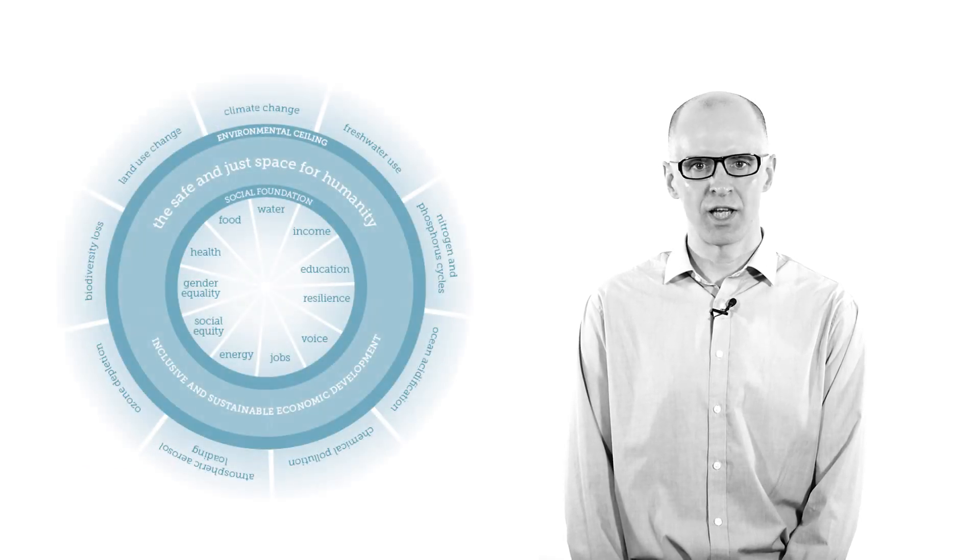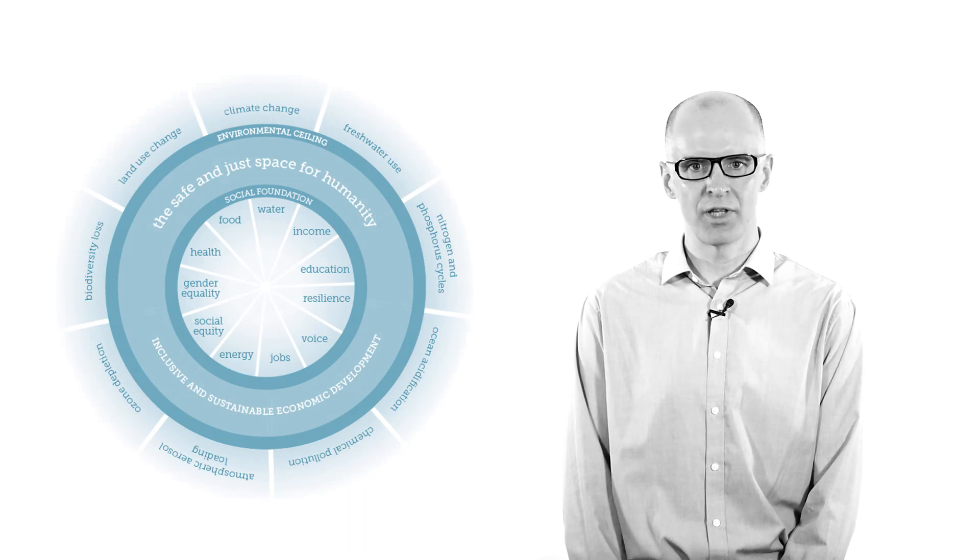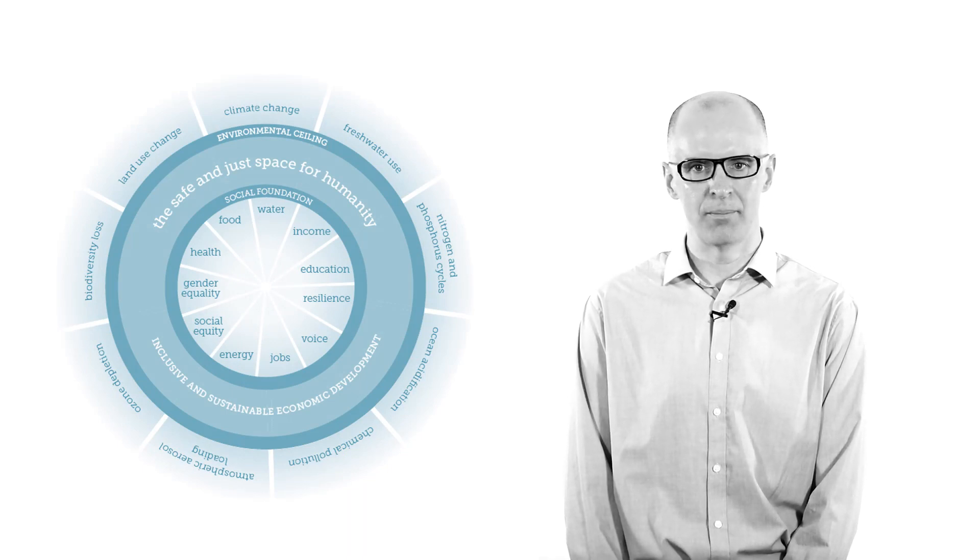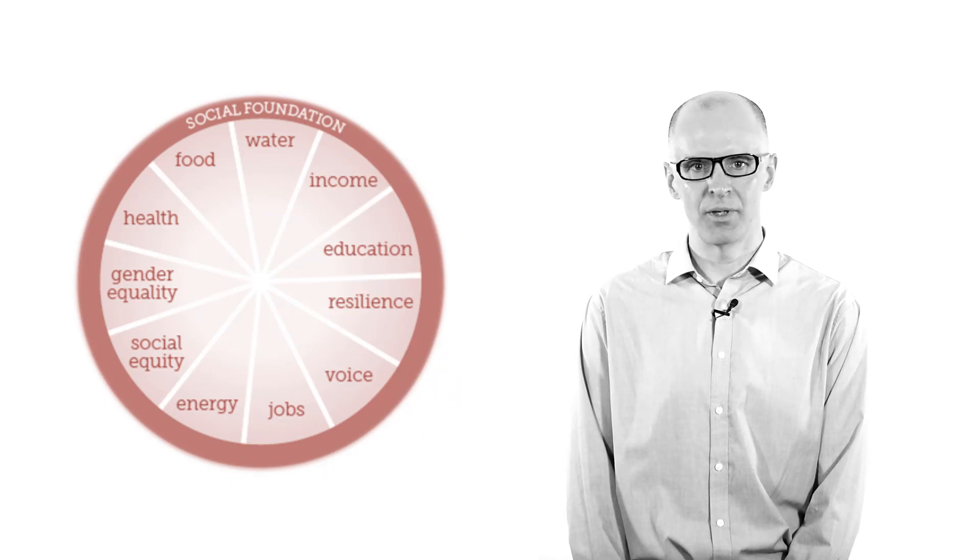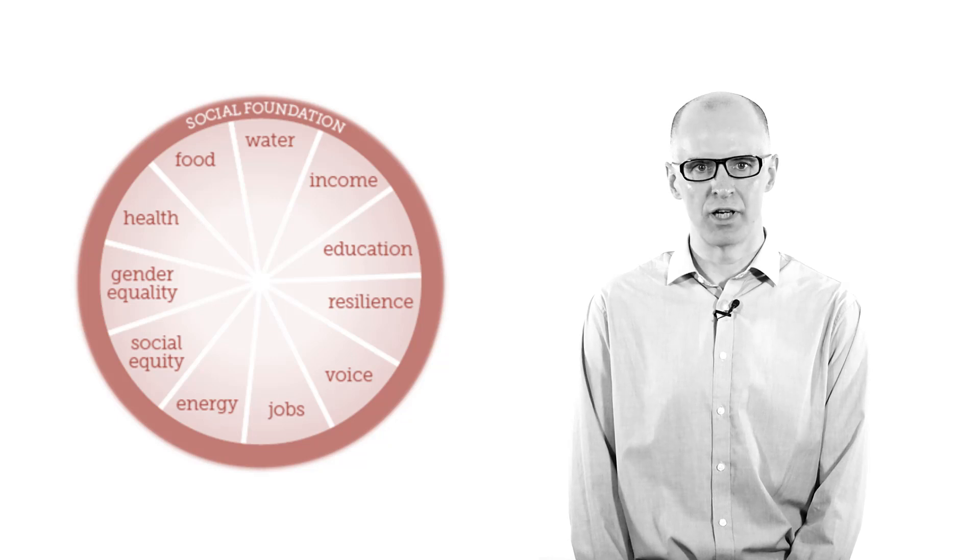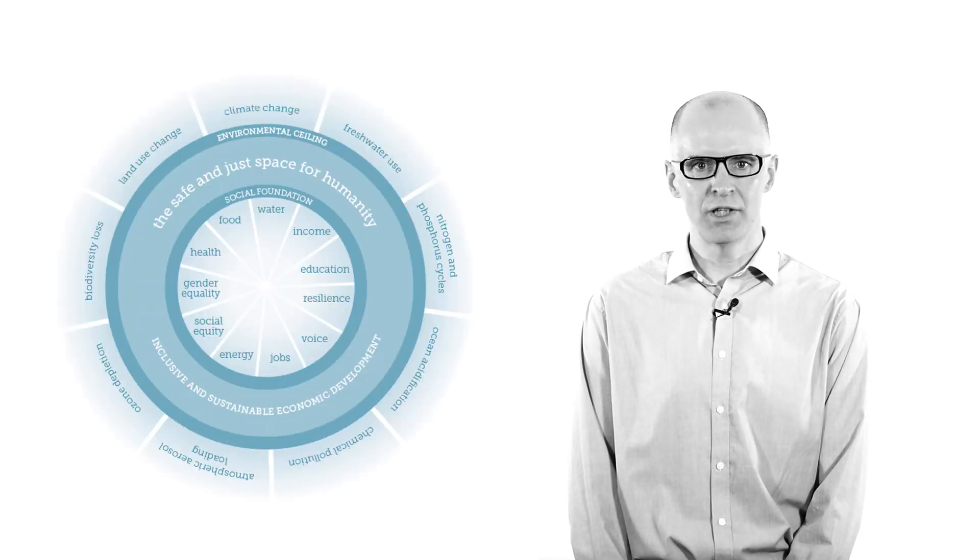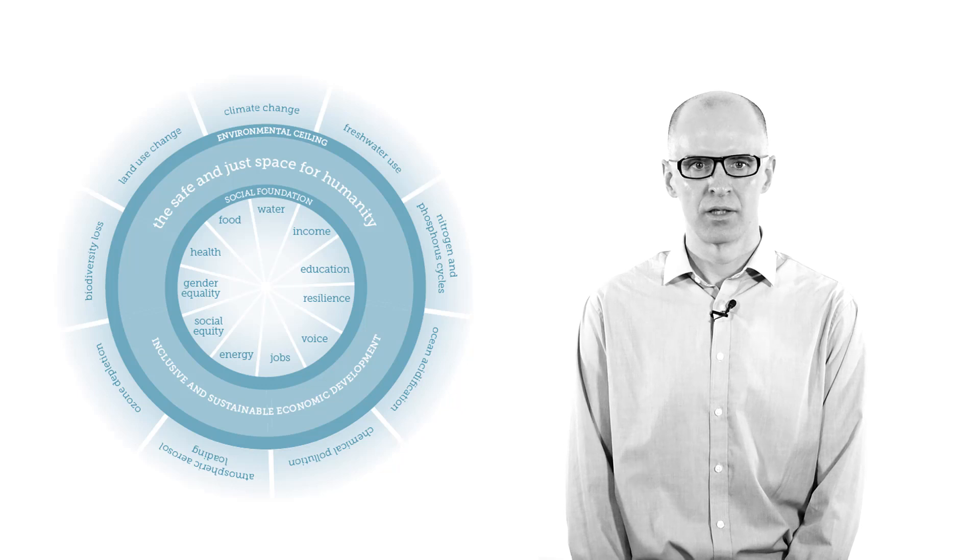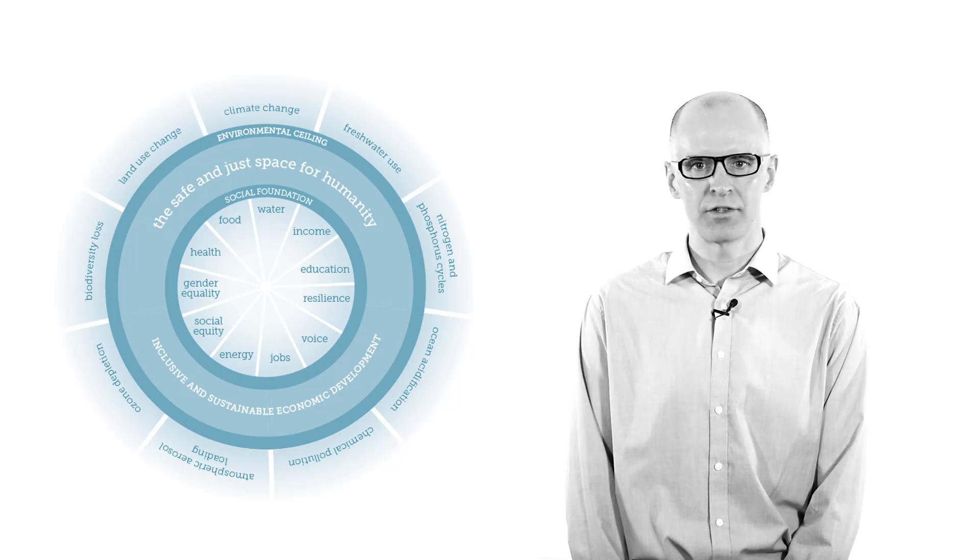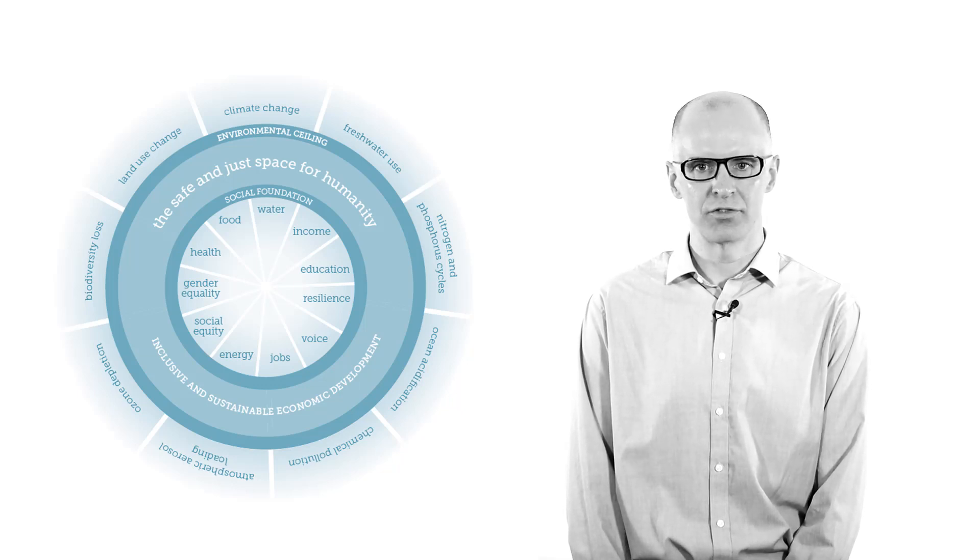The doughnut model for sustainable development considers living within environmental and social limits. Social issues are present within an inner boundary with environmental limits presented as an outer boundary. The space between the two represents an environmentally safe and socially responsible place for humanity to succeed. It is also an area where sustainable economic development takes place.